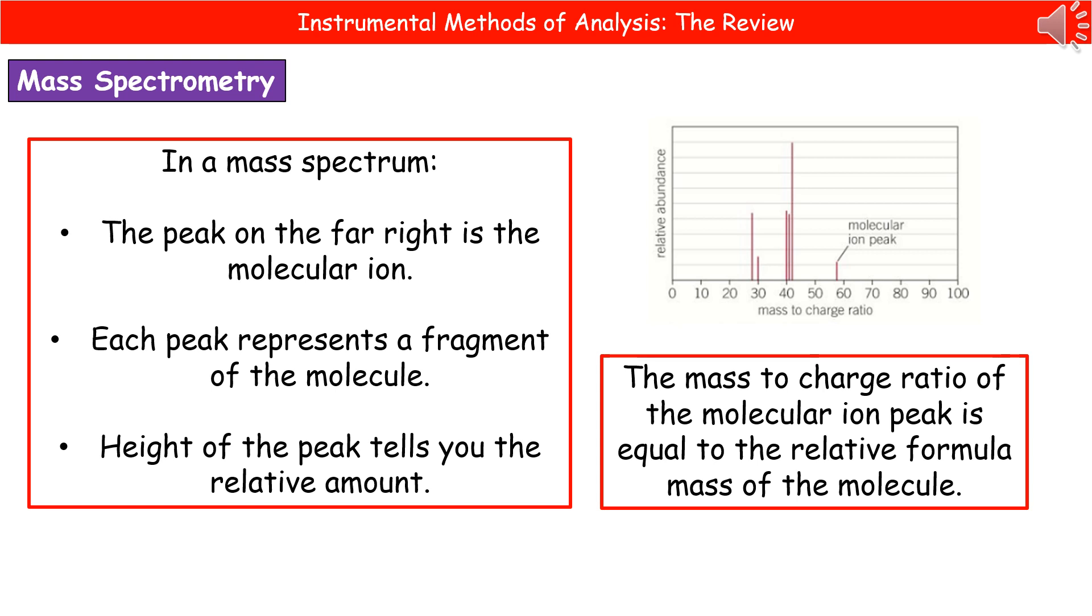Now what we need to do is understand how to interpret one of these mass spectrums that we will generate on the screen. On the right-hand side there, I've given you an example mass spectrum that we could generate. First thing is, when you're looking there, you can see that the peak on the very far right, the one furthest along on your mass-to-charge ratio scale, that is the molecular ion.